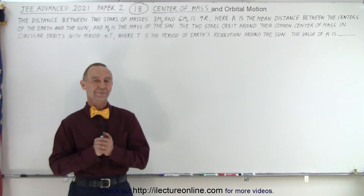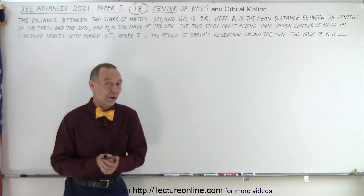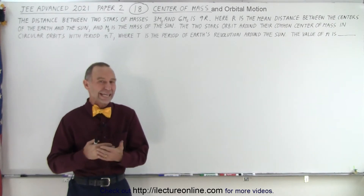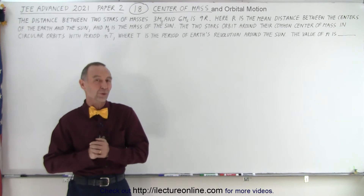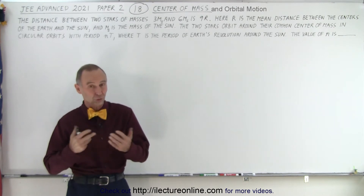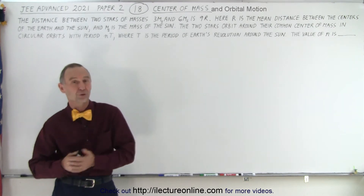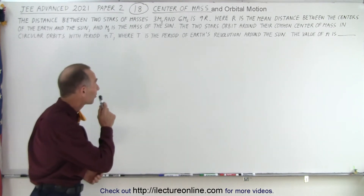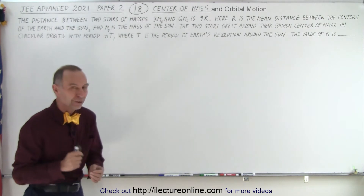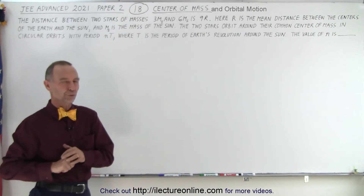Welcome to ElectronLine. Our next problem from the JEE Advanced Test from 2021, Section 2, or Paper 2, deals with center of mass and orbital motion.